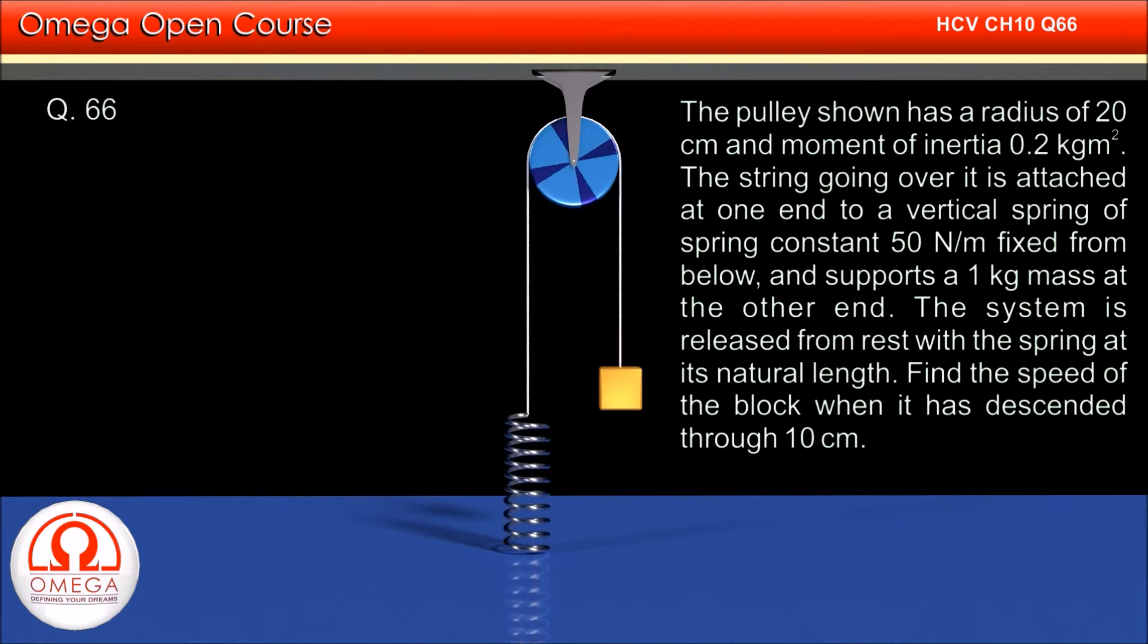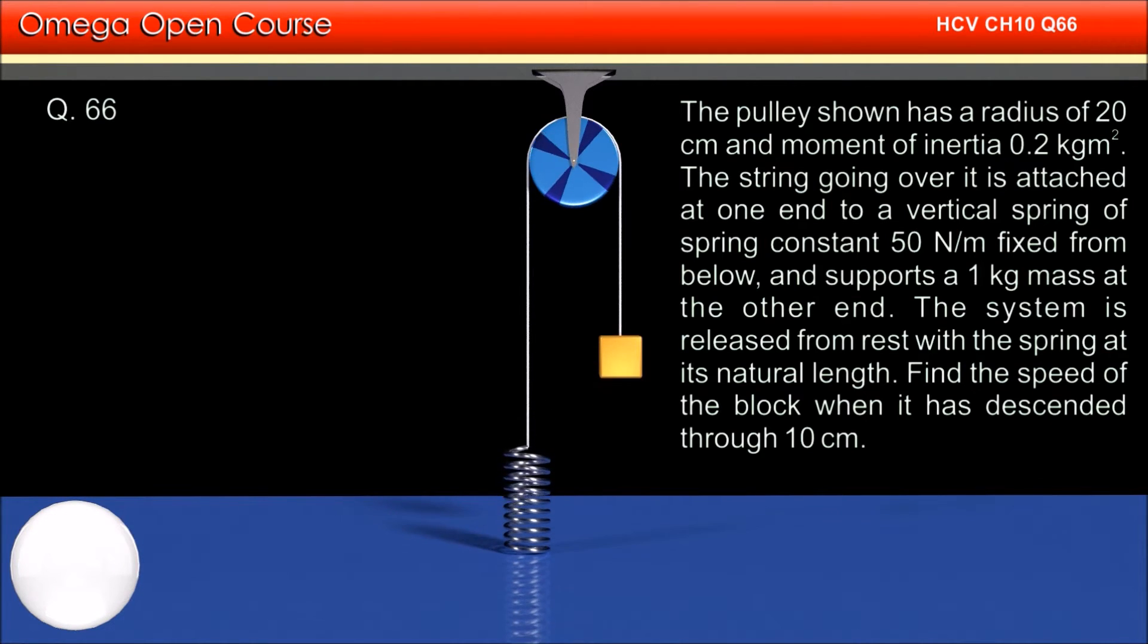The system is released from rest with the spring at its natural length. Find the speed of the block when it has descended through 10 cm.